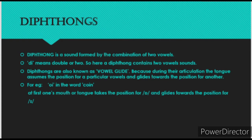When pronouncing diphthongs, at the beginning the mouth and tongue are in the position of the first vowel. The next vowel is not pronounced fully — the mouth and tongue start in the position of the first vowel and glide towards the second. Let's take an example: the word 'coin' has three phonemes — K, OI, and N. The OI is a diphthong because it contains two sounds: O and E, starting in the position of O and gliding to E.